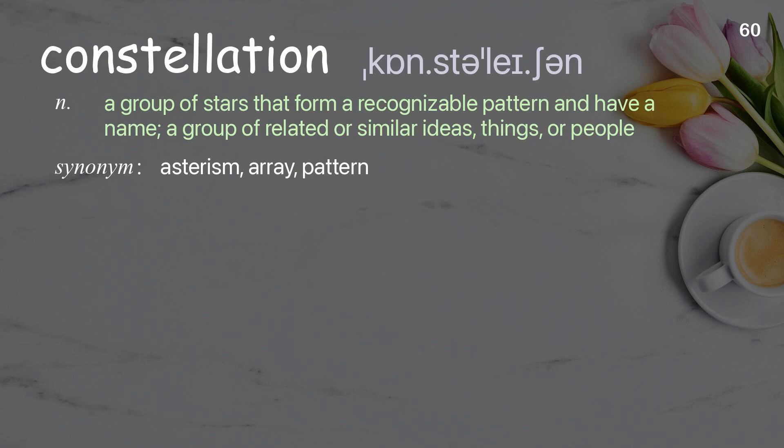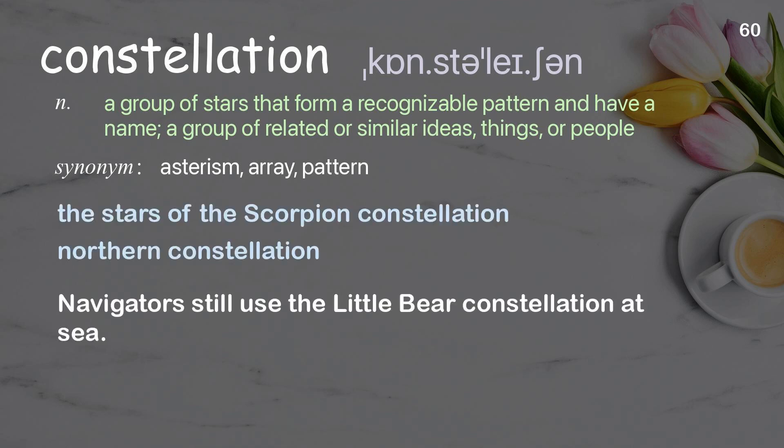Constellation. A group of stars that form a recognizable pattern and have a name; also a group of related or similar ideas, things, or people. Examples: the stars of the Scorpion constellation, northern constellation. Navigators still use the Little Bear constellation at sea.